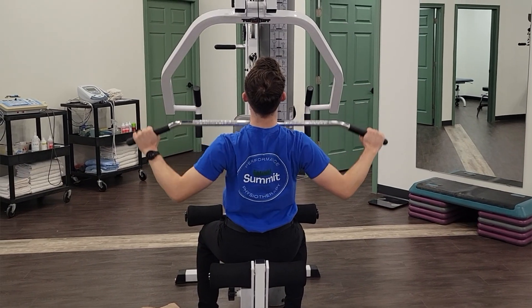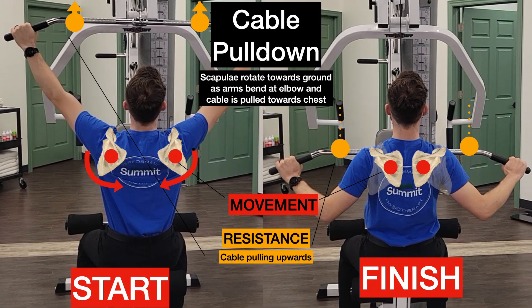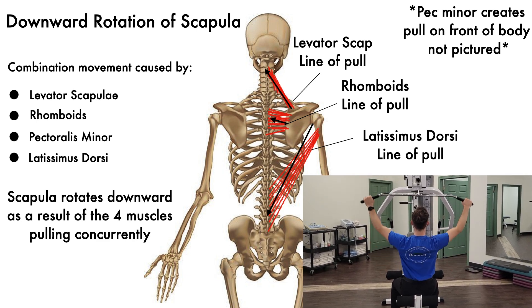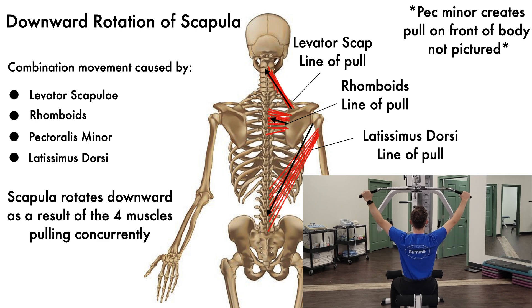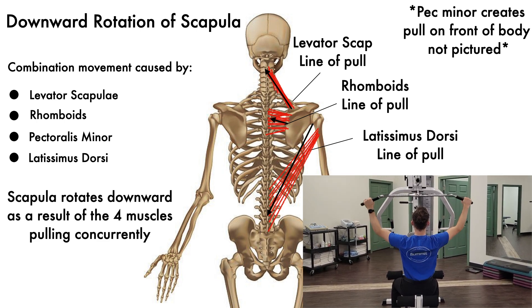If we're going to work our scapula into a downwardly rotated position against resistance, we first have to put them into an upwardly rotated position to start with. A good example of this is the cable pull down exercise, or the lat pull down. The exercise starts with the shoulders in an upwardly rotated position because our arms are overhead holding onto the bar. Then as we pull our elbows to our sides and our hands down towards our chest, the scapula will downwardly rotate back to neutral. The downward rotation muscles — levator scapulae, rhomboids, and pec minor — coordinate the rotational component, but the latissimus dorsi contributes a lot of the power, hence the name lat pulldown.